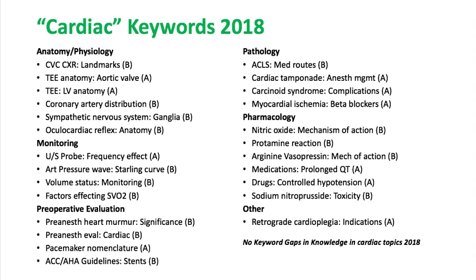These are the cardiac keywords from 2018 on topics such as anatomy and physiology: where does our central venous catheter go on chest x-ray, landmarks, the anatomy of the aortic valve and left ventricle on echo, where do the coronary arteries go and which walls do they supply, the sympathetic nervous system and its ganglia, oculocardiac reflex, monitoring topics such as how frequency affects our ultrasound probe, arterial pressure waveform, Starling curve and volume status monitoring, and mixed venous oxygen saturation monitoring and factors that affect it.